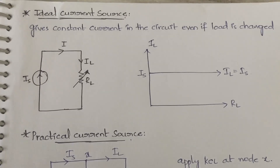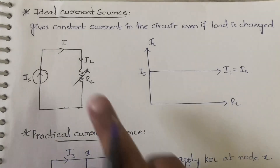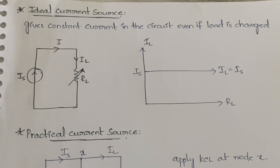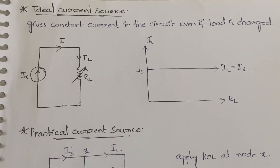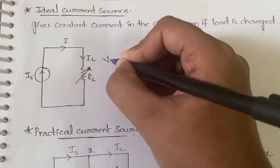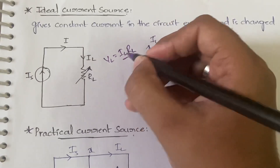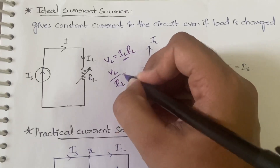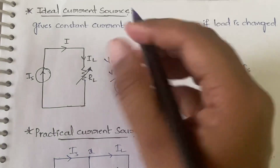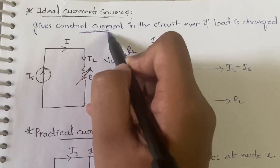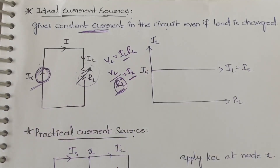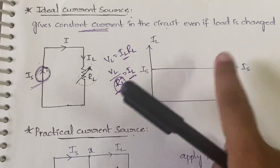Next, let us discuss the ideal current source. It provides constant current in the circuit even when the load is changed — instead of constant voltage, it gives constant current. Although VL = IL × RL means IL = VL / RL, so IL should change when RL changes, an ideal current source always provides constant current IL = IS regardless of changes to RL. The graph is a horizontal line at IL = IS.